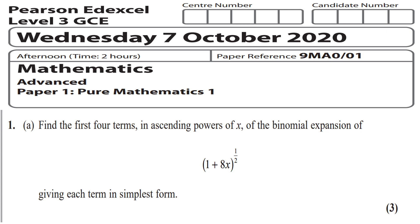A level maths, looking at the Edexcel past paper for the full A level course. Question number one, looking at binomial expansion in roughly five minutes.